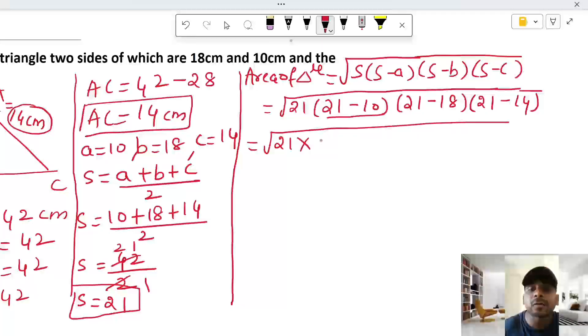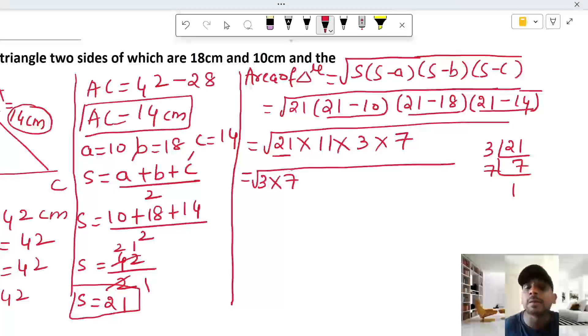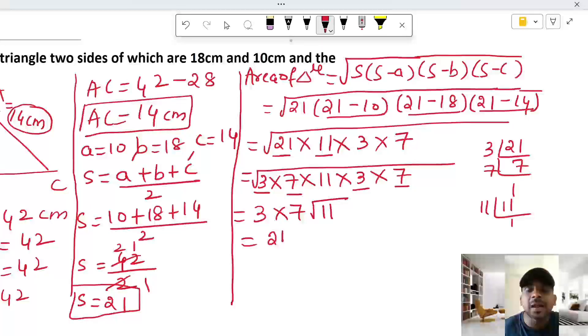This gives us the square root of 21 times 11 times 3 times 7. We can simplify by writing 21 as 3 times 7, giving us root of 3 times 7 times 11 times 3 times 7. Simplifying further, the area of the triangle equals 21 root 11. This is the answer.